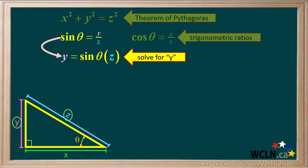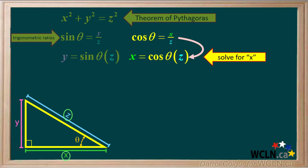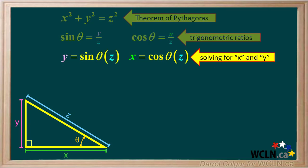Solving the sin ratio for y gives us y equals sin theta times z. And solving the cos ratio for x gives us x equals cos theta times z. So now we have the expressions for x and y.